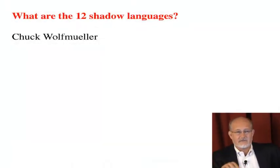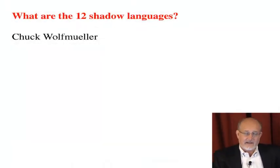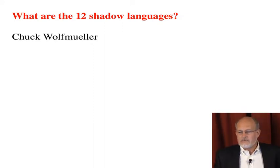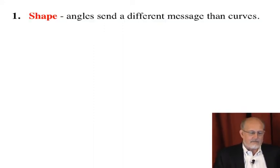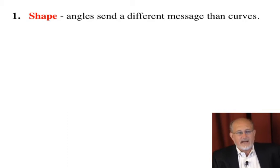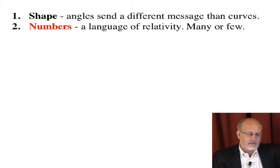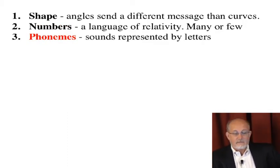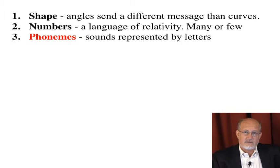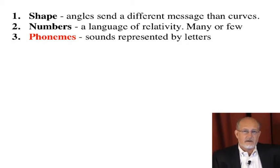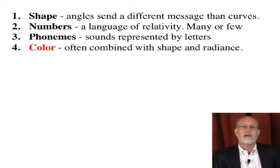These are like the protons, neutrons, and electrons of thought. Whenever you have a mental image — something in your head — what is that idea made of? It's a mood or an attitude. Well, shape, numbers, phonemes — which are the sounds represented by letters and combinations of letters of the alphabet — color.